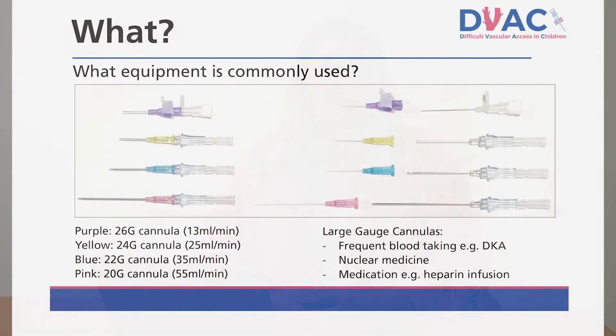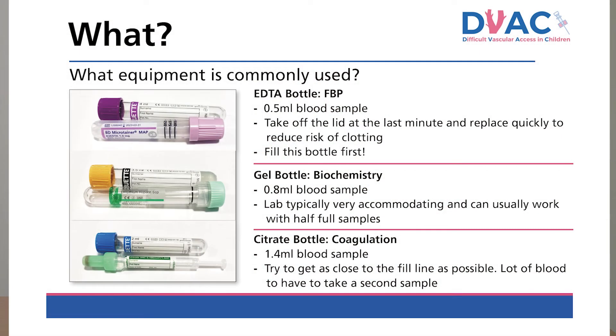Cannulas come in many sizes, with the commonest size being a 24 gauge or yellow cannula. Remember, larger gauge cannulas may be needed in special circumstances such as particular nuclear medicine scans, heparin infusions, and for short-term increased blood sampling like those seen when managing DKA. Most paediatric bloods can be extracted from smaller paediatric sample bottles. When in doubt, contact the lab in advance to minimise the need for repeated blood draws. From my own experience, removing the EDTA lid last and replacing first reduces the risk of unwanted clotting.